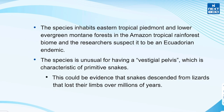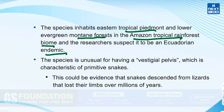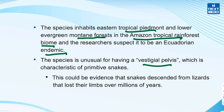Looking at its habitat, it inhabits eastern tropical Piedmont and lower evergreen mountain forest in the Amazon tropical rainforest biome, and researchers suspect it to be an Ecuadorian endemic. The species is unusual for having a vestigial pelvis, which is characteristic of primitive snakes, and this could be evidence that snakes descended from lizards that lost their limbs over millions of years.